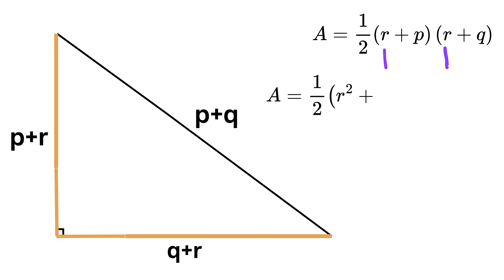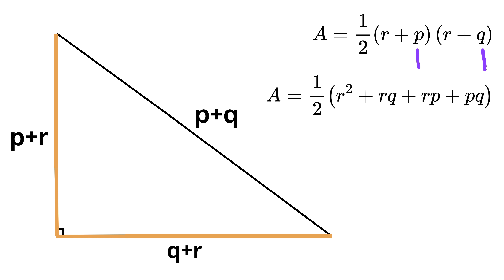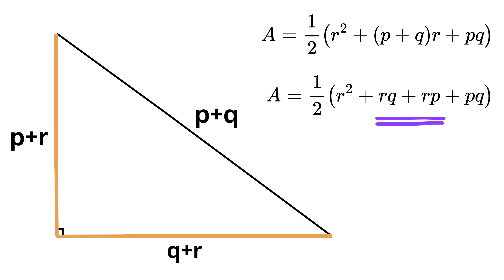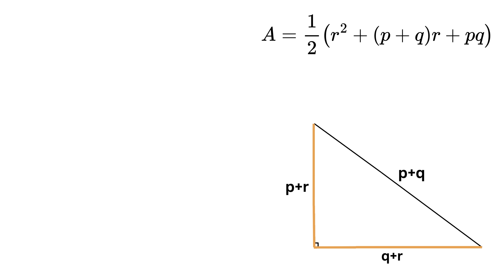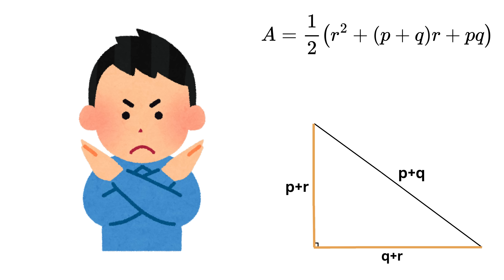Expanding ½(p + r)(q + r): r × r = r², r × q = rq, r × p = rp, and p × q = pq. Collecting like terms gives the area as ½(r² + (p + q)r + pq). But we only know p and q, so we still need to find r.